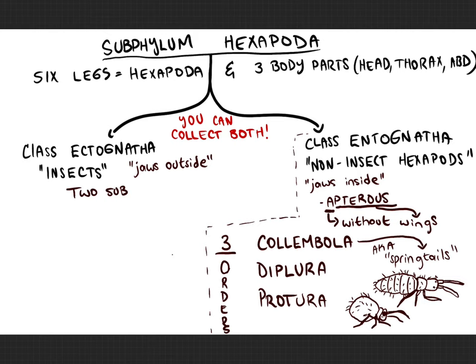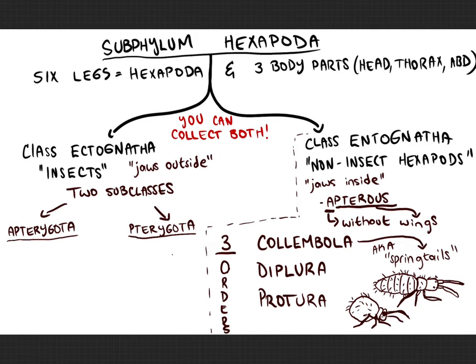Moving into class Insecta, you have two subclasses: Apterygota and Pterygota. Apterygota means they do not have wings, and Pterygota means they do have wings. The Apterygota are the more primitive insects — they're wingless. You might think they are Entognatha, but they are actually Ectognatha, with their mouthparts largely on the outside. There are about two orders of Apterygota.